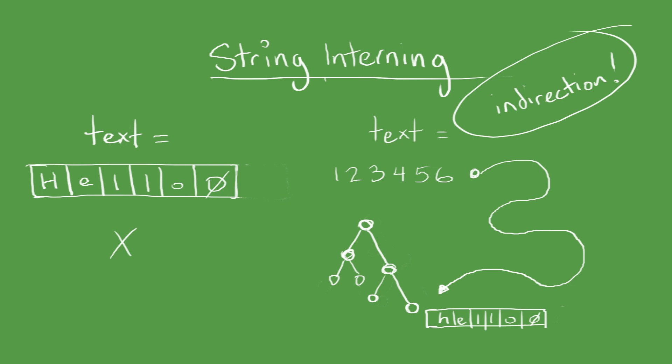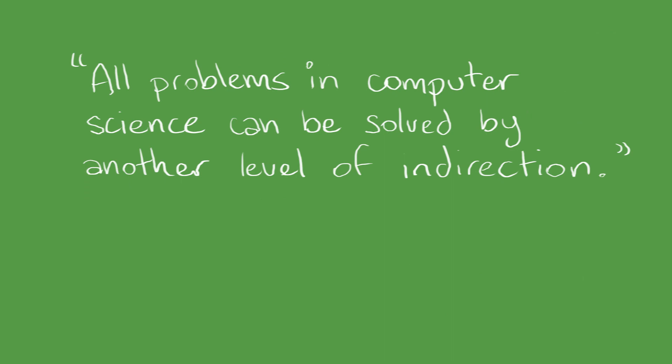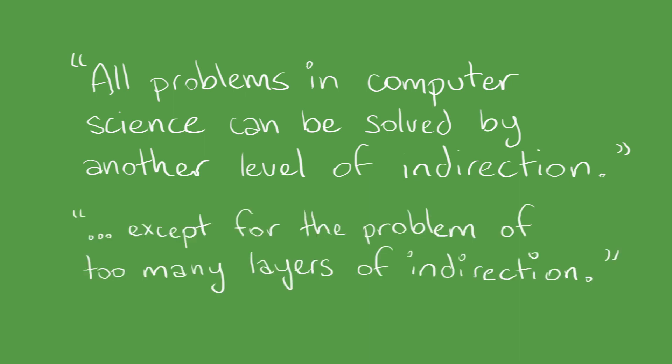Yes, it's another layer of indirection between us and our precious string. There's a famous saying by David Wheeler: all problems in computer science can be solved by another level of indirection. And a famous corollary by Kevlin Henney: except for the problem of too many layers of indirection.